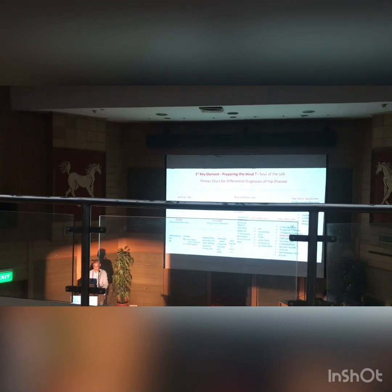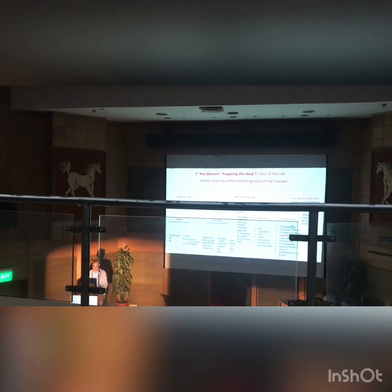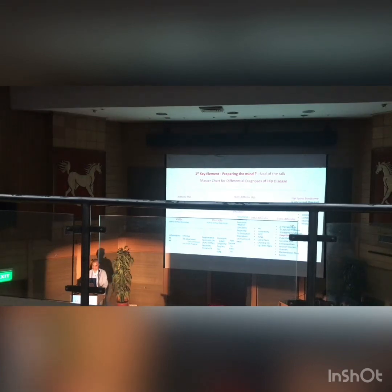An arthritic hip could be stable or unstable. Stable arthritic conditions include inflammatory conditions like rheumatoid arthritis, ankylosing spondylitis, infective, tubercular, degenerative — primary and secondary osteoarthrosis — developmental congenital dislocations, slipped capital femoral epiphysis, and post-traumatic arthritic joints. The unstable joints are largely non-arthritic, but in later stages they can become arthritic.